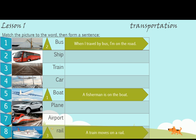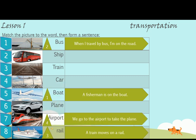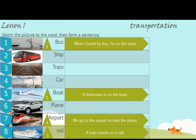Number 4. What's this? This is an airport. We go to the airport to take the plane. Number 5. What's this? This is a plane. When I travel by plane, I go through the air.